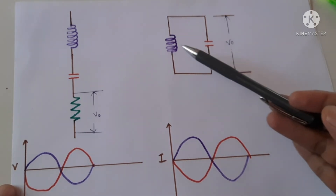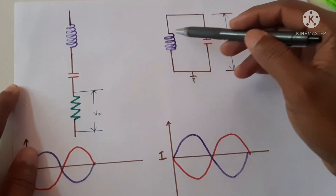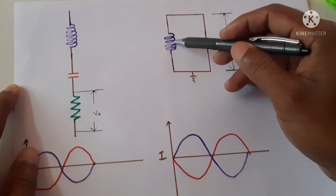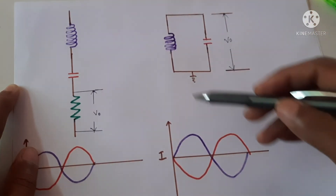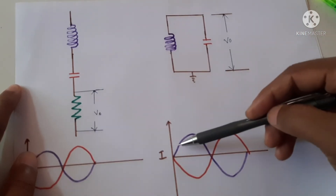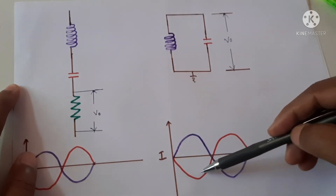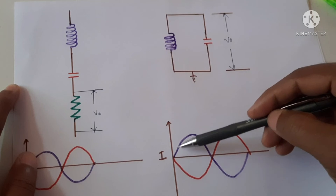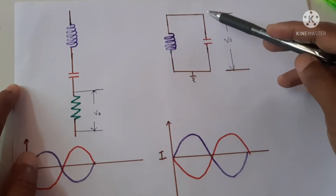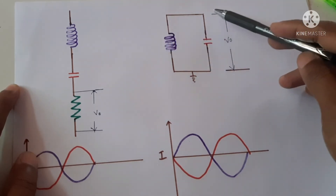Looking at the parallel capacitor and inductor combination, it is just opposite to the series. If the same 50 kilohertz frequency is coming and the resonant frequency is 50 kilohertz, at that frequency the reactance of the inductor equals the reactance of the capacitor. Here the voltage is the same across both, but the current flowing through the inductor equals the current flowing through the capacitor — but they are in opposite directions, so they cancel. It will act like an open circuit for the incoming signal, and at that frequency we will get maximum voltage.